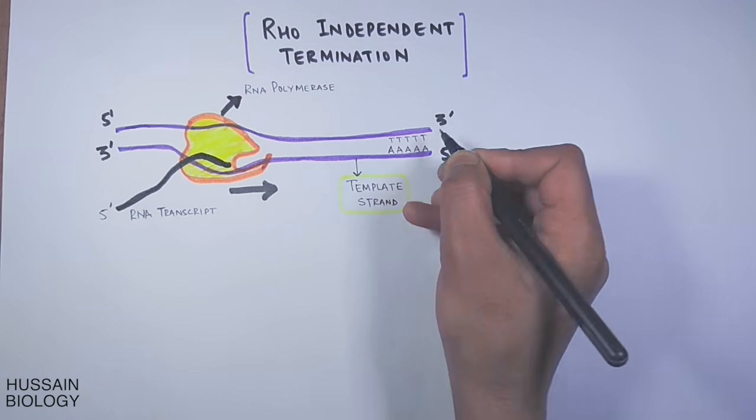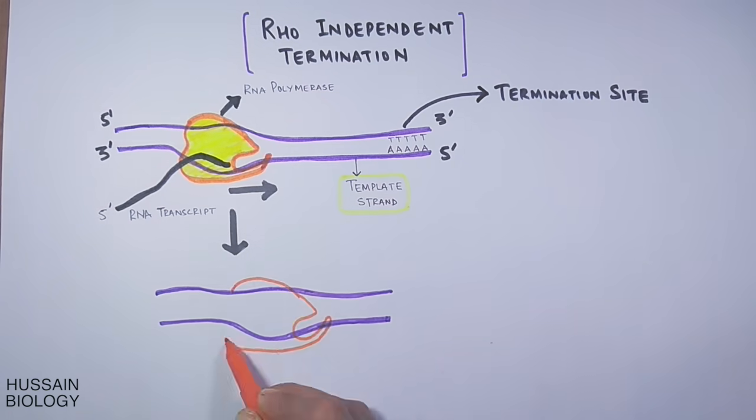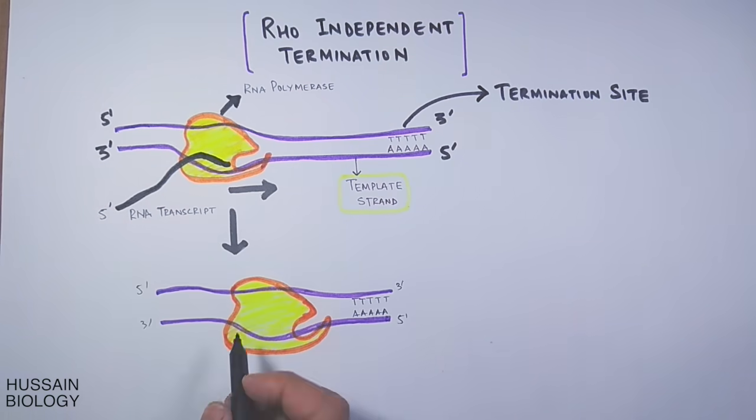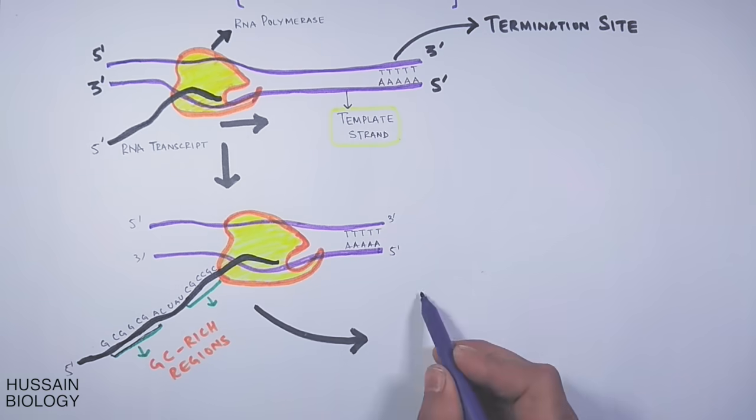Having poly-AT—pairs of adenine and thymine—to see how hairpin loop forms, in the next step, the RNA molecule being synthesized has got a couple of GC regions like GC, GG, CC, G.